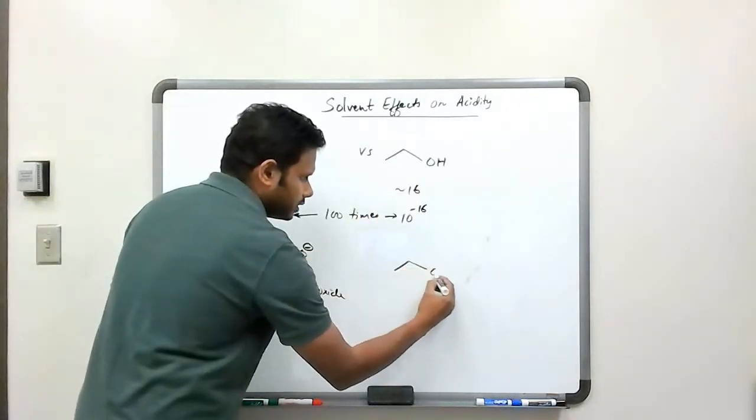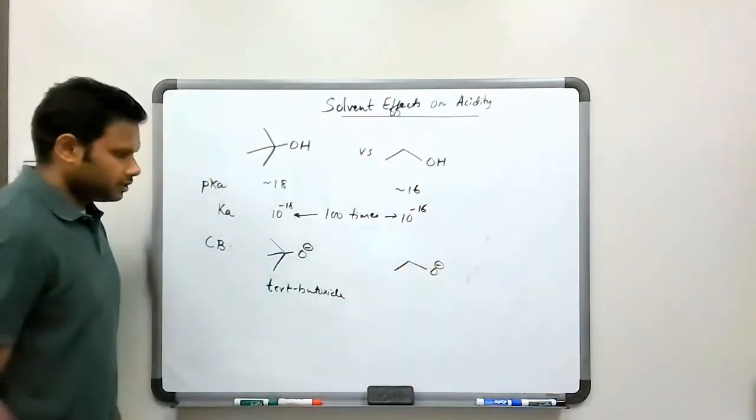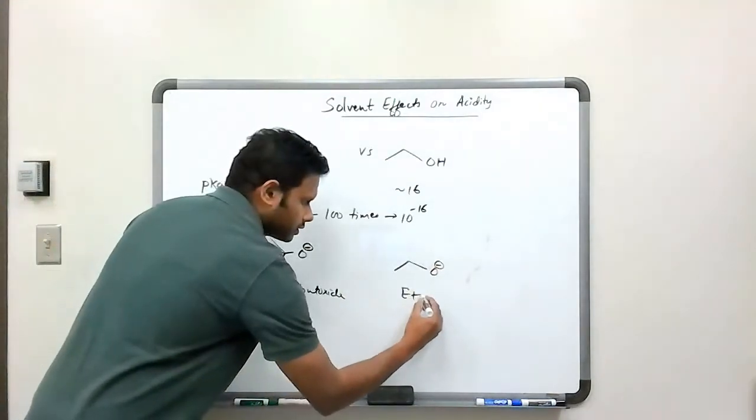And for the other one, we will get ethoxide. This is called an ethoxide ion.